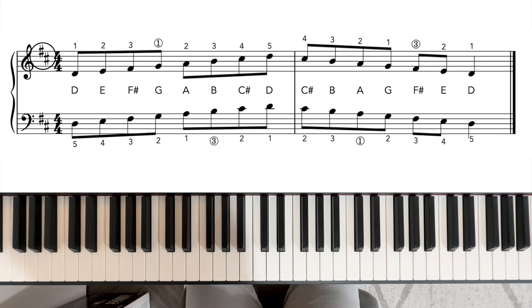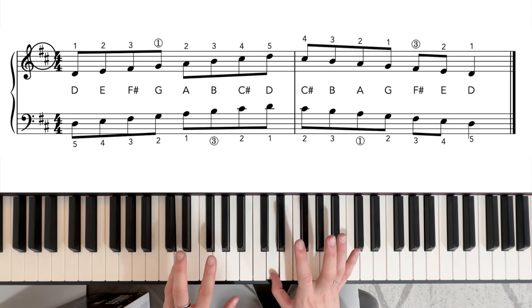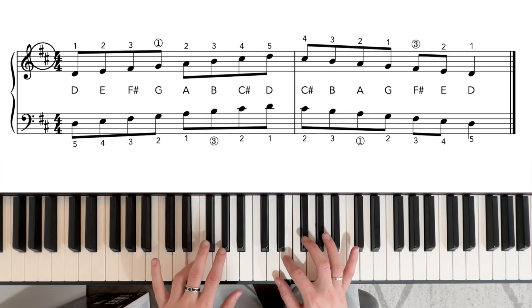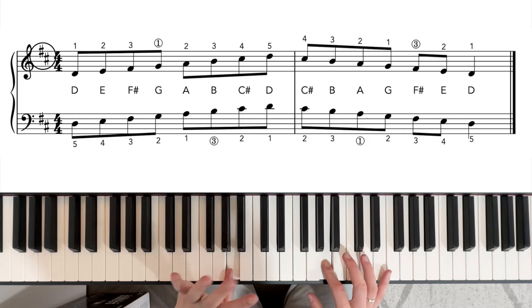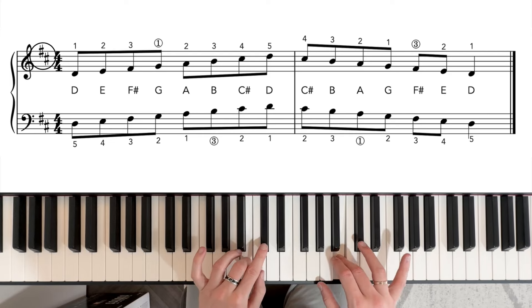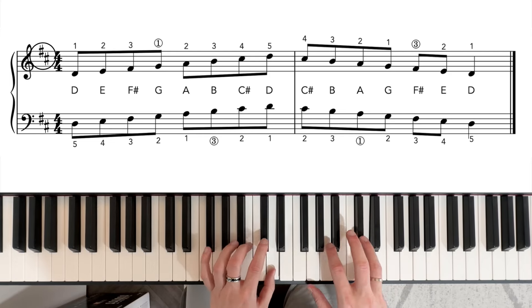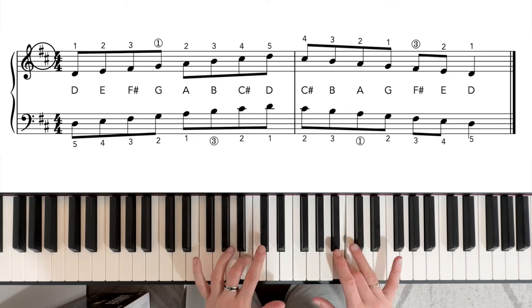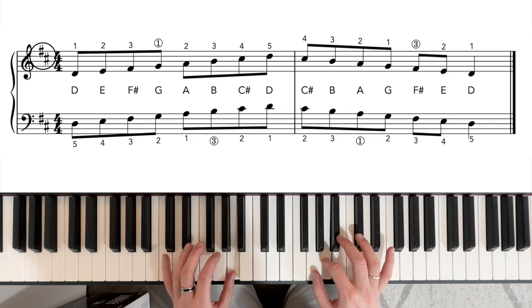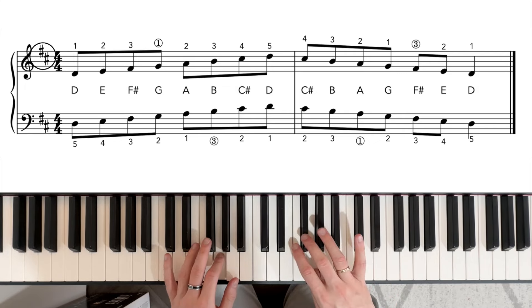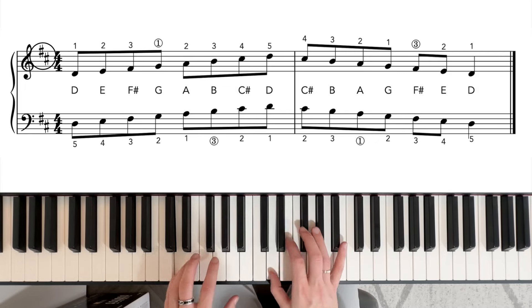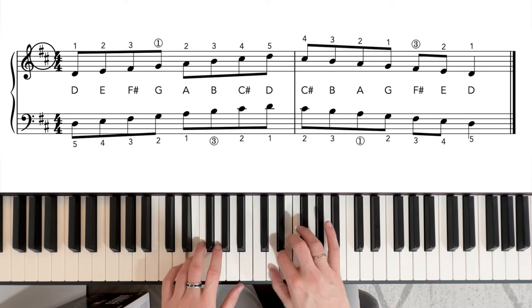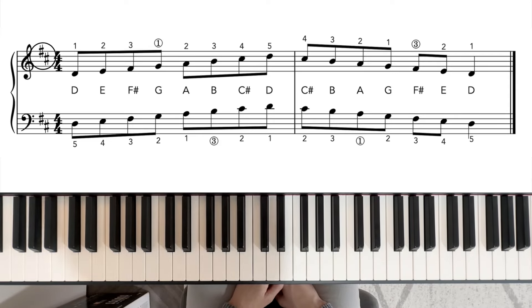When you've mastered the scale with the right and the left hand, then it's time to put it hands together. F sharp, right hand changes to one, A, left hand crosses over three. And D, coming back, three under on the B, left hand crosses under, right hand crosses over three to the F sharp. And there we are. That's our D major scale.